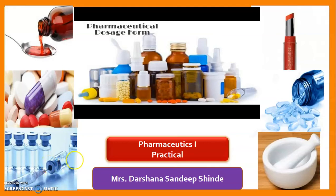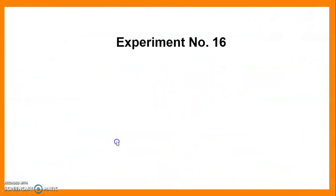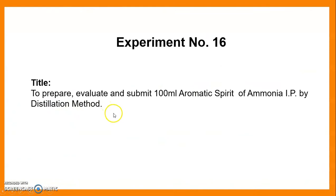Welcome, dear students, to Pharmaceuticals First Practical Session. I am Darsana Sangeb Shinde. Today we deal with experiment number 16. The title of our experiment is to prepare, evaluate, and submit 100 ml of Aromatic Spirit of Ammonia IP by distillation method.